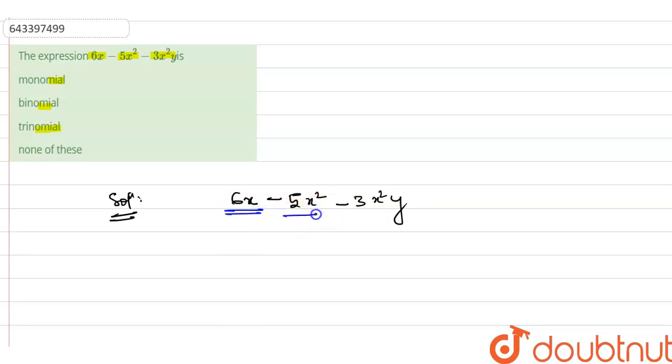6x is one term, minus 5x square is second term, and minus 3x square y is third term. As we know that monomial contain a single term. Binomial contain two terms and trinomial contain three terms.